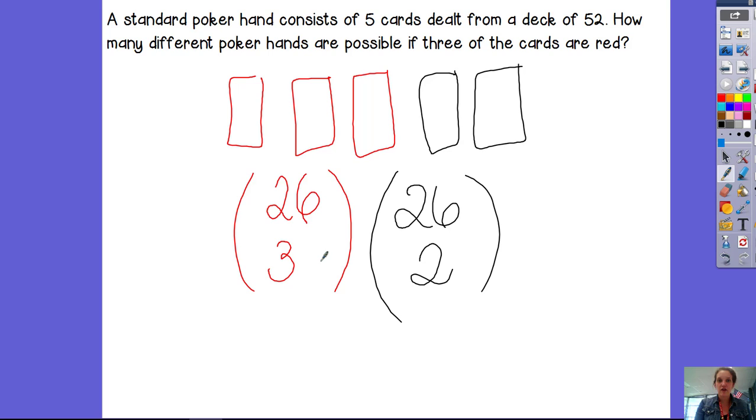So I'm just going to multiply 26 choose three which is 2600 with 26 choose two which is 325.